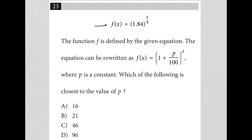This question starts off by saying that f(x) is equal to 1.84 to the x over 4 power. The question goes on to say the function f is defined by the given equation. The equation can be rewritten as f(x) equals 1 plus p over 100 to the x power, where p is a constant. Which of the following is closest to the value of p?